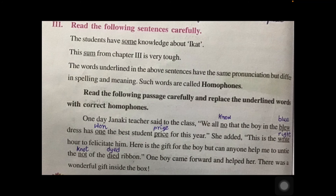In the passage: 'blew' (B-L-E-W) should be replaced with 'blue' (B-L-U-E); 'one' (O-N-E) should be replaced with 'won' (W-O-N); 'price' (P-R-I-C-E) should be replaced with 'prize' (P-R-I-Z-E). Then: 'This is the right (R-I-G-H-T) way to felicitate him' — 'write' (W-R-I-T-E) is wrong there. 'Can anyone help me to untie the not' — replace 'not' (N-O-T) with 'knot' (K-N-O-T). 'The died ribbon' — replace 'died' (D-I-E-D) with 'dyed' (D-Y-E-D). Rewrite the passage with all correct homophones.